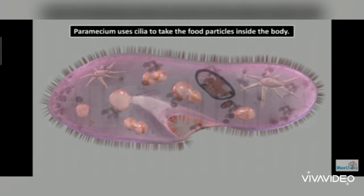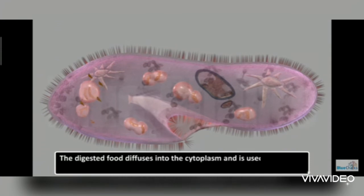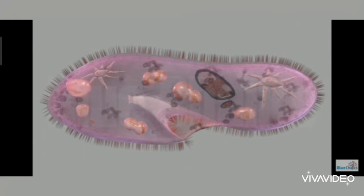The mode of nutrition is holozoic. Cilia help the organism to engulf food through the oral groove. The food is engulfed and enclosed in a food vacuole. The food moves through the cytoplasm in a process known as cyclosis. Food digested in food vacuoles is absorbed by the cytoplasm, and undigested food is expelled through the anal pore or cytopyge.